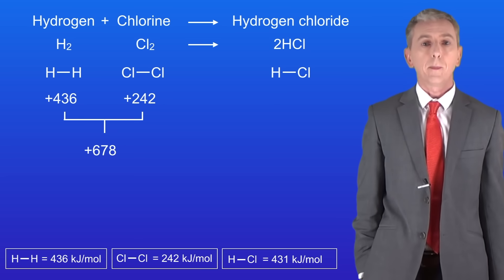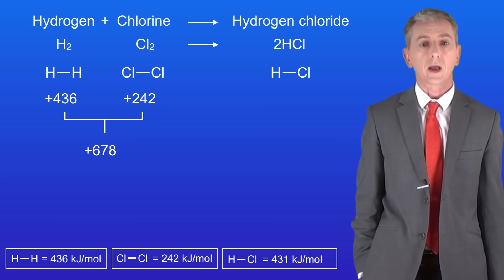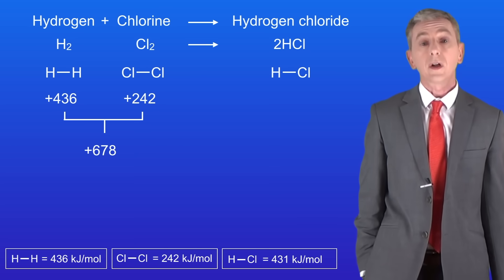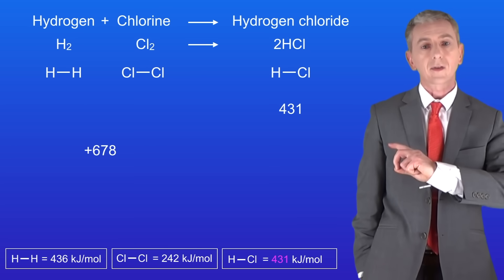On the right-hand side, we're making the bond between the hydrogen and the chlorine atoms. This releases 431 kilojoules per mole. So here's that value.